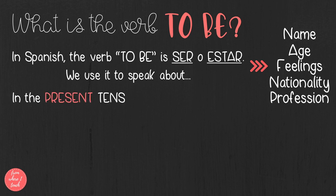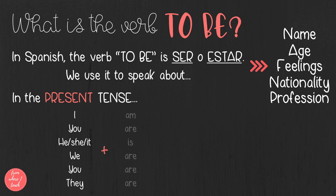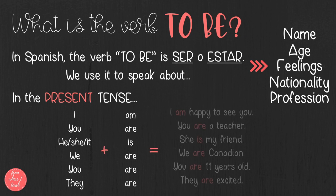In the present tense, the subjects I, you, he, she, it, we, you, and they go with am, are, is, and are.